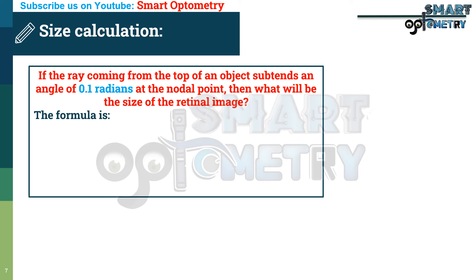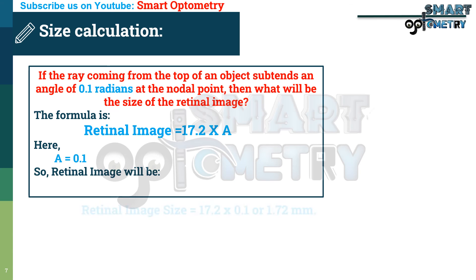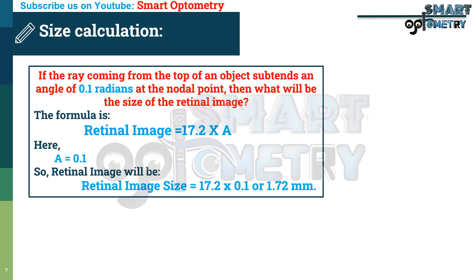The formula is: retinal image size = 17.2 × A, where A is 0.1 radian. So the retinal image size = 17.2 × 0.1 = 1.72 mm.